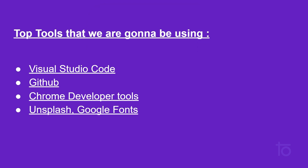I have listed down four important tools that we are gonna be using. The very first and basic tool that we are gonna be using through our whole journey is Visual Studio Code. The second one is GitHub, third one is Chrome Developer Tools, and fourth one is Unsplash and some Google Fonts.